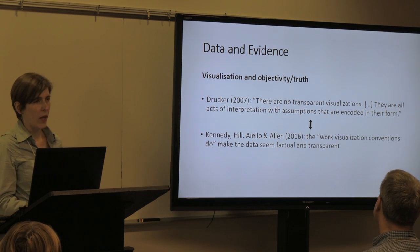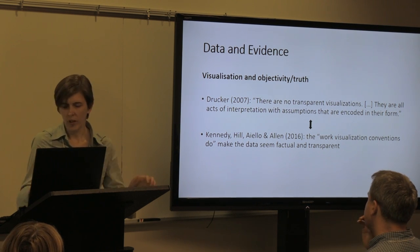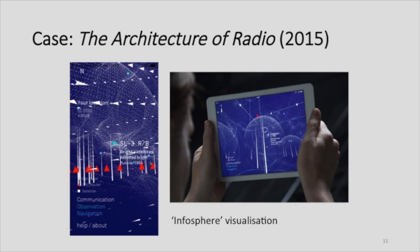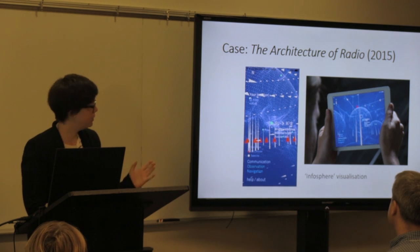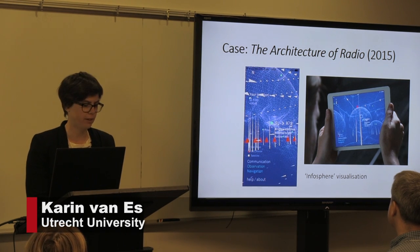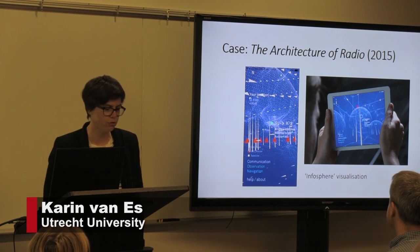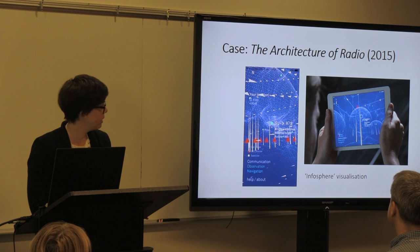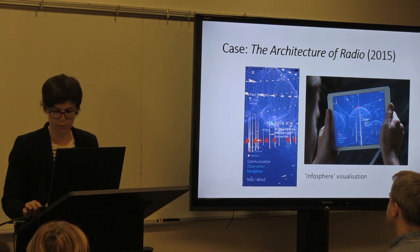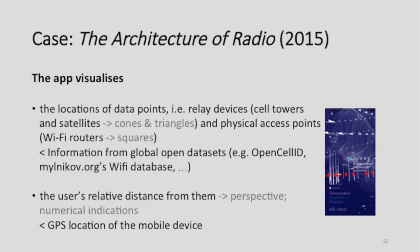In order to explore how deeply ingrained those conventions are, we'll zoom in on one example which Karen will now introduce. The case we want to discuss is the Architecture of Radio, an application for Apple and Android devices created in 2015 by the Dutch information designer Richard Viegas. Its main feature is a 360-degree visualization of what the product website calls the Infosphere — the environment of informational entities that facilitates our practices of observation and communication, and that physically surrounds us even though it's invisible. When installed, the app generates a location image of nearby data points, showing the position of relay devices such as cell towers and satellites, but also physical access points such as Wi-Fi routers, and visualizes the relative distance between those hardware devices and the viewer.